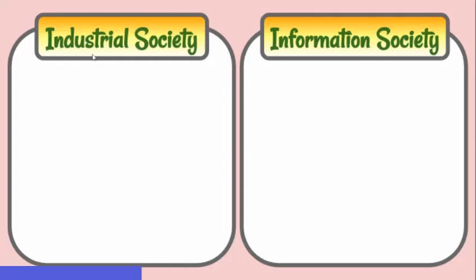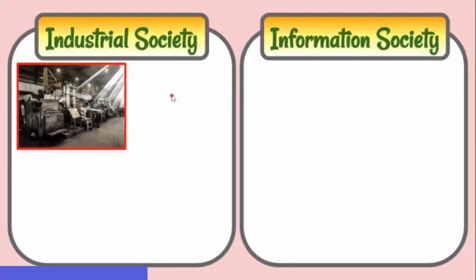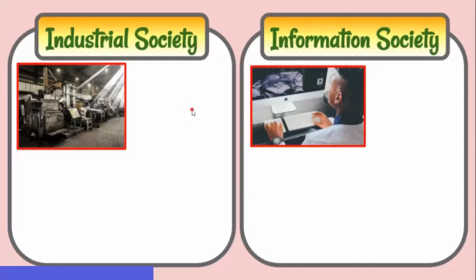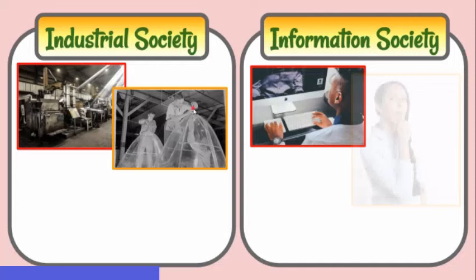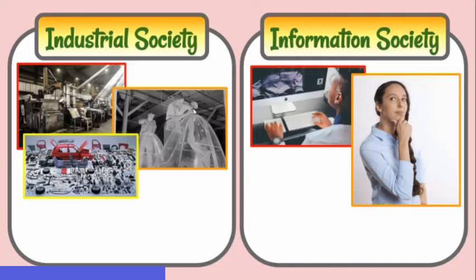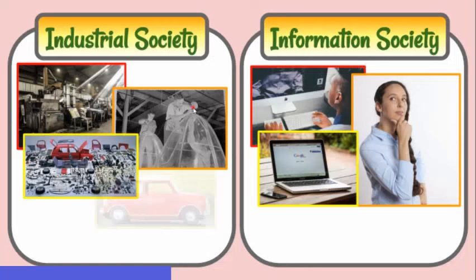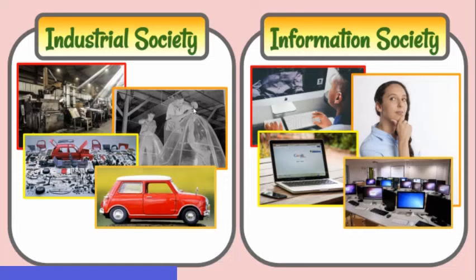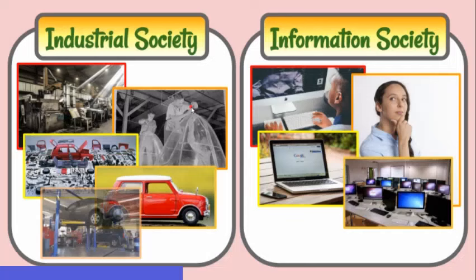Now let's compare industrial society to information society. The most important part of industrial society is the engine or machine, while computer for information society. For basic function, industrial society is physical labor and information society is mental labor. In terms of productive power, that's material and information, respectively. Industrial society produces useful goods and services, while information technology is produced in information society. The production center in industrial society is in the facilities with equipment, while information utilities with networks for information society.